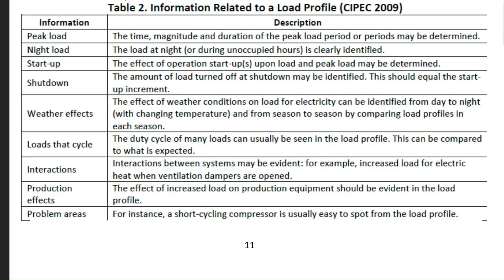Next is the loads that cycle — this is the main load related to installation capacity. Next is the interaction between systems, such as ventilation dampers. You can also include realistic examples such as variation in load during tea time or lunch time. The production effects mean more production equals more load. Problem areas can also be identified using the daily load profile diagram — for instance, a short cycling compressor will take load instantly and that will be reflected in the daily load profile diagram.